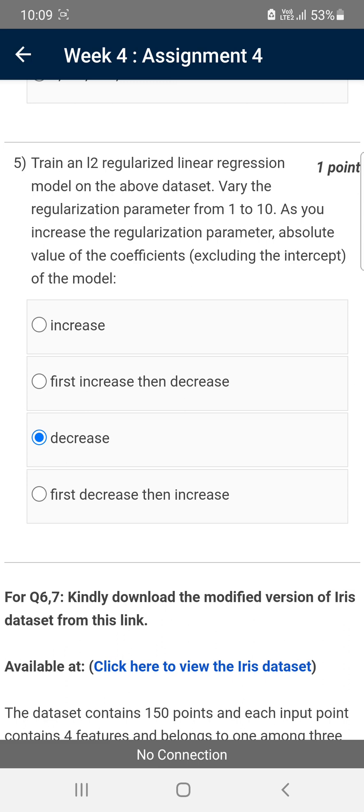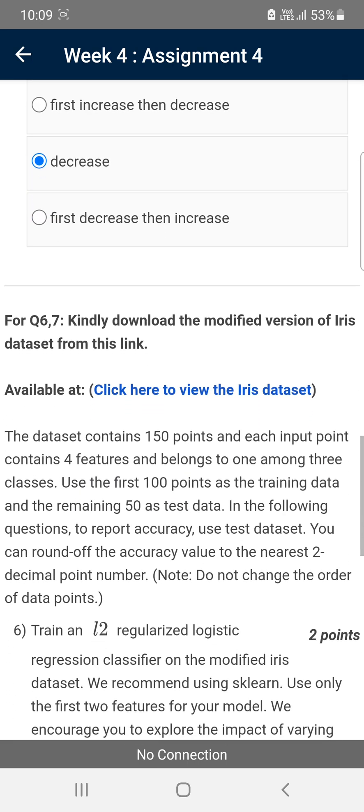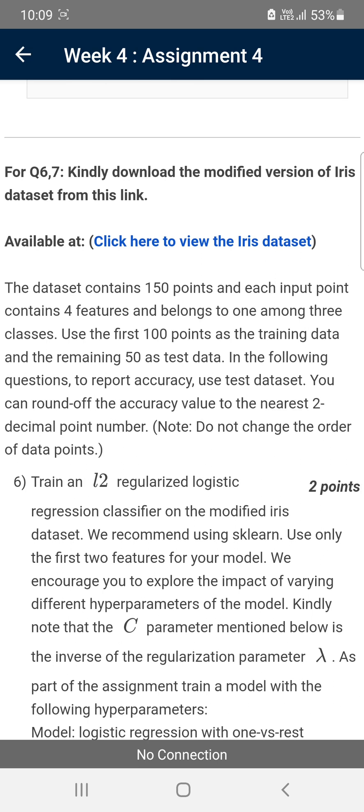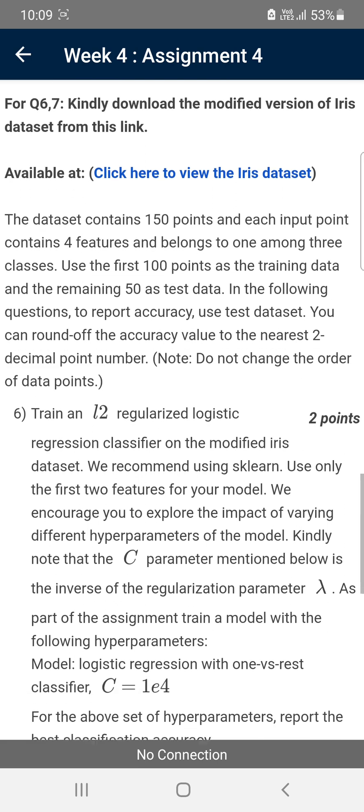Moving on to the sixth question. For sixth and seventh questions, it is based on the given iris dataset. The dataset contains 150 points and each input point contains four features. First hundred points we use as training data and remaining 50 as test data.